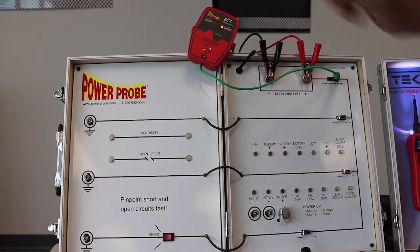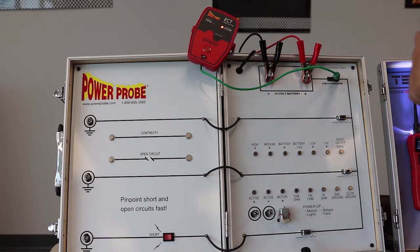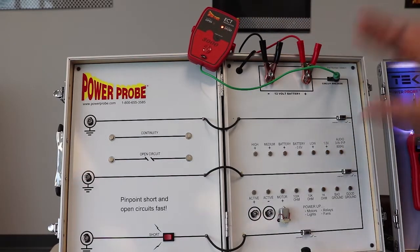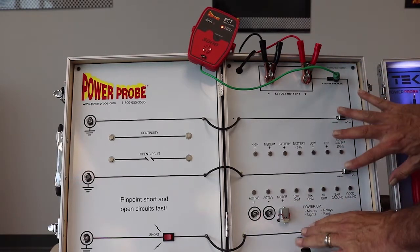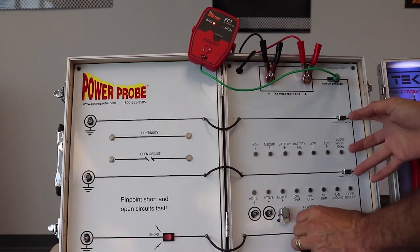Now that light and that tone, which you can turn off, is indicating yes, you do have a short somewhere on that circuit. Maybe you're in the vehicle moving things around, moving wire harness, you cause the short to go away. You would hear it change to the other tone.